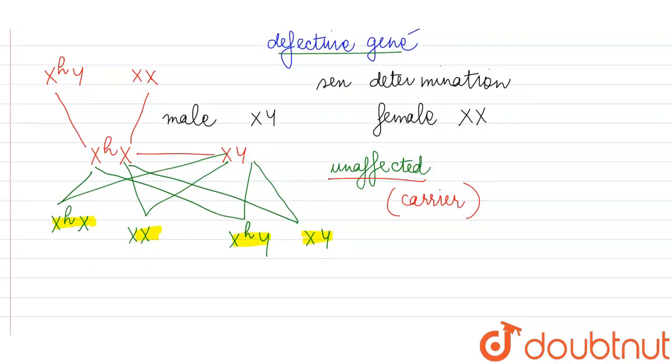But since it is a sex-linked disorder, the female which is carrying this defective gene will remain a carrier but she will herself remain unaffected. The disorder will not show in her phenotype.